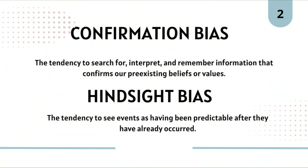Confirmation bias is the tendency to search for, interpret, and remember information that confirms our pre-existing beliefs. This leads us to favor information that aligns with our existing beliefs and to disregard or undervalue information that contradicts them — like having tunnel vision where we only see what we want to. For example, someone who believes in a specific diet will pay more attention to articles supporting it and overlook evidence that suggests otherwise.